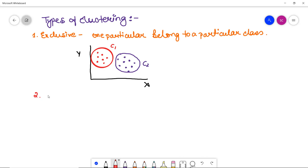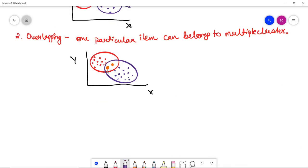The next type is overlapping. What happens in overlapping is that one particular item can belong to multiple clusters. Here you can see these are the red items which belong to a particular class, and these are the violet items which belong to a particular class. Now these two orange items belong to both the classes, that means they have certain properties of both classes, so it falls into the overlapping class. This is the concept of overlapping clustering - it overlaps both clusters.